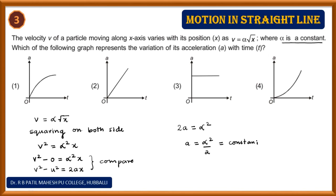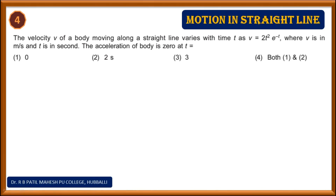Since acceleration is constant and independent of time, the correct graph is the one showing a horizontal line. The right answer is the graph where acceleration remains constant.